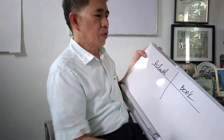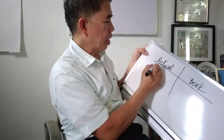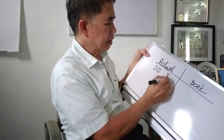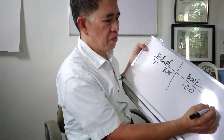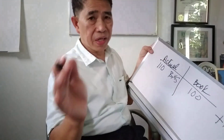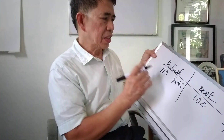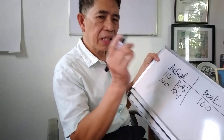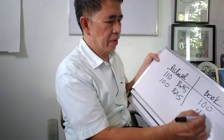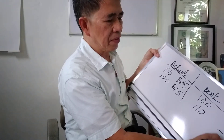For example, in the actual count, we have counted 110 boxes but the book record shows 100 only. Therefore, we have positive 10 variance. Or otherwise, we counted actually 100 boxes but the book indicates 110, therefore we have negative 10.